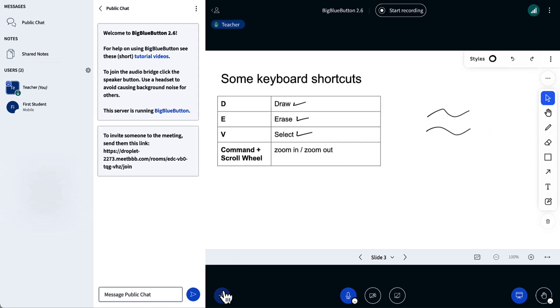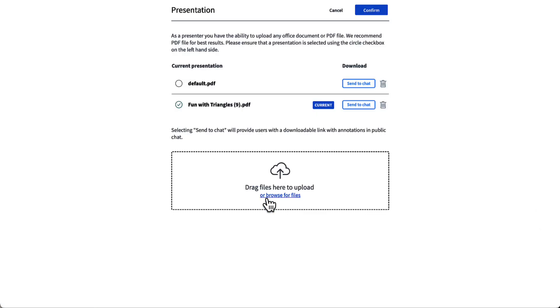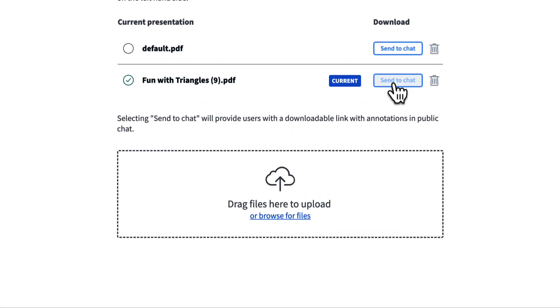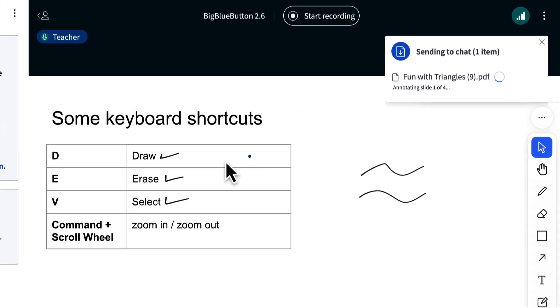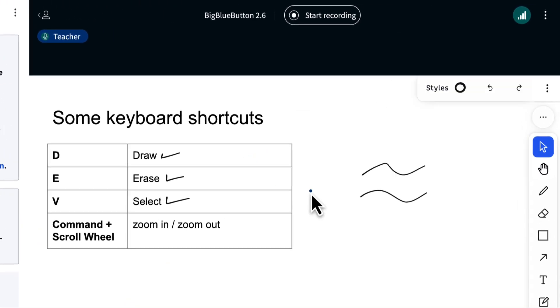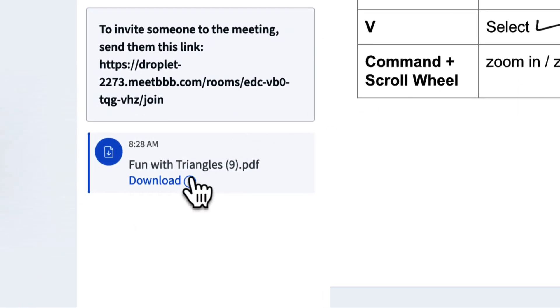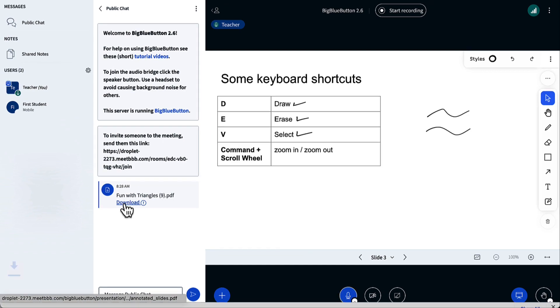One of the nice things in BigBlueButton 2.6 is I can actually share the presentation with all the whiteboard annotations. If I click send to chat, BigBlueButton will take a snapshot of the current slides with all the annotations, and all the students will see the name of the slide and can click download.